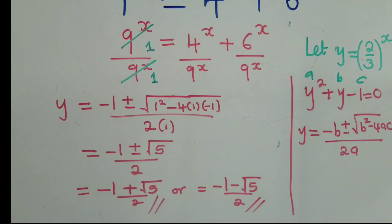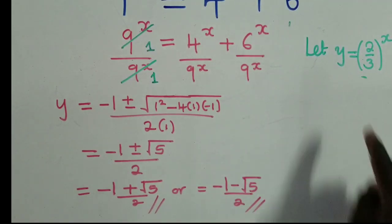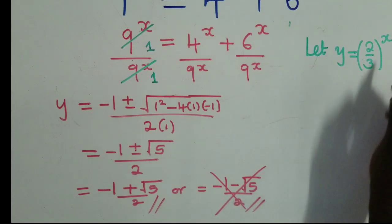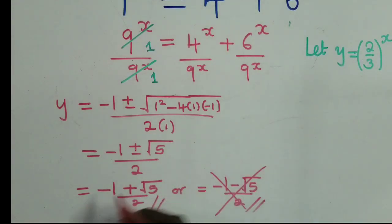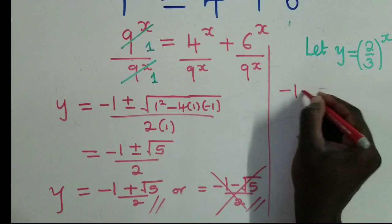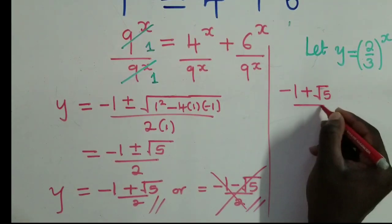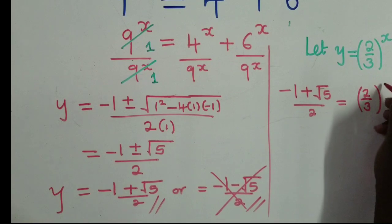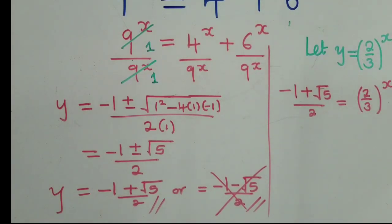These are the two y values. After finding them, we check which gives us a solution for x. We discard the negative value because a negative result won't help us find x. We keep y equals (−1 + √5) / 2. We substitute this back: (−1 + √5) / 2 equals (2/3)^x.